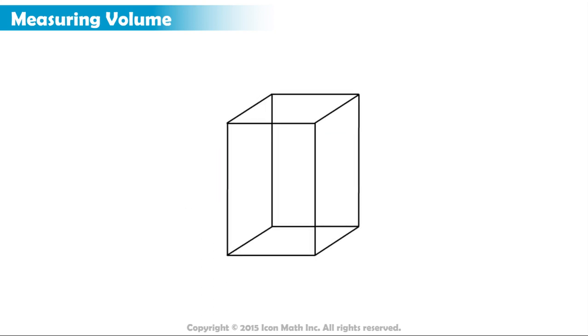Let's now try to fill this rectangular prism with unit cubes and determine its volume. One, two, three, four. It takes four unit cubes to make the bottom layer of this solid.